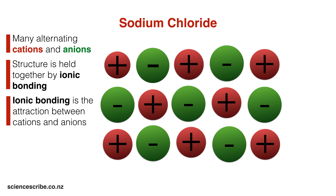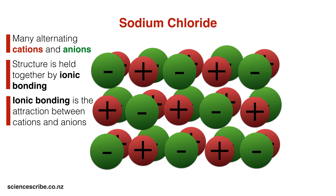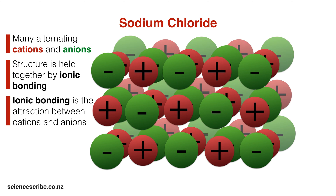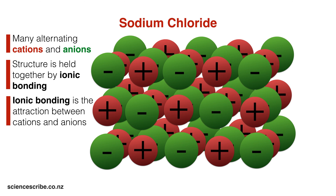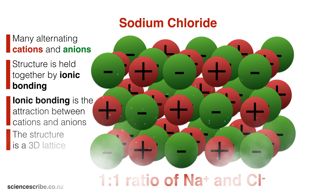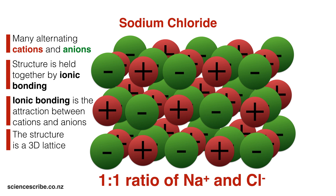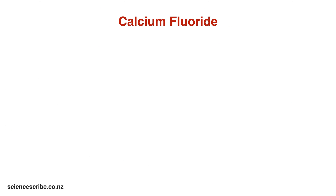Note that this structure extends in all three dimensions as well, so I've added extra layers in front and in the back. At the end of the day, the entire structure will have a ratio of 1 sodium plus to 1 chloride minus ion.